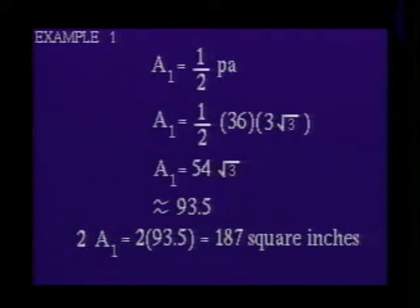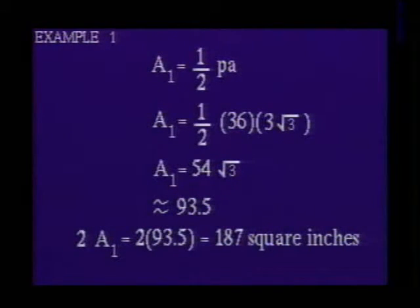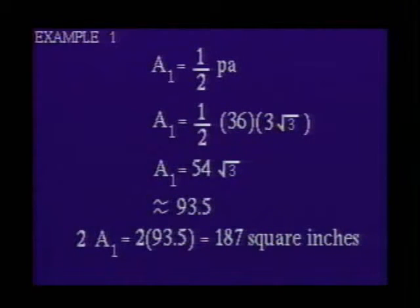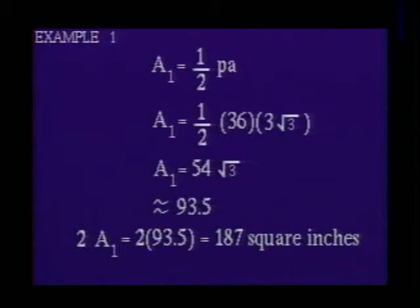Now we are ready to use the formula for finding the area of a regular hexagon: A₁ = ½ times the product of the perimeter and the apothem. Substituting 36 for P and 3√3 for A, we get that the area of the hexagon is 54√3 square inches, or approximately 93.5 square inches. Since we have two congruent bases, the area of both bases will be 2 × 93.5, or 187 square inches.